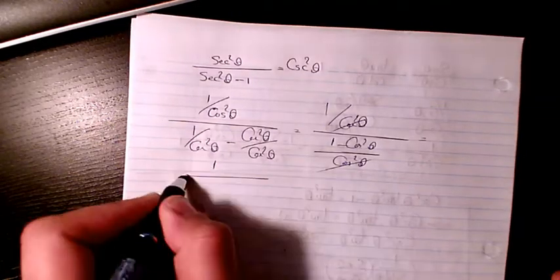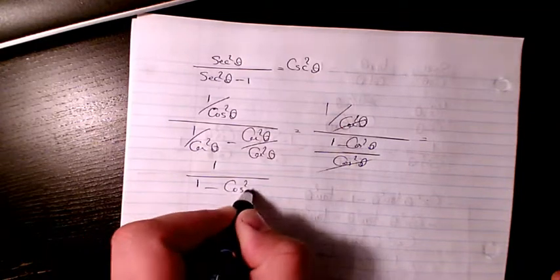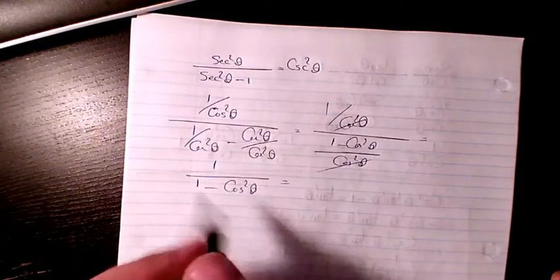These two can cancel out and I will have 1 over 1 minus cosine square theta. Everything else is cancelled.